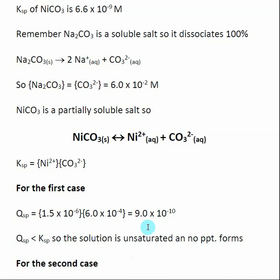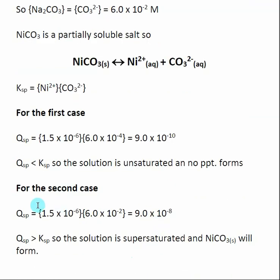Qsp is less than Ksp, so the solution is unsaturated and no precipitate forms. It means I'm going to have to add more carbonate for us to get it to precipitate out, so I have a feeling here that this is what's going to happen in the second case.